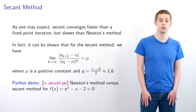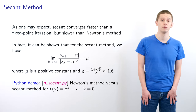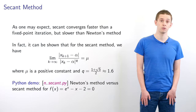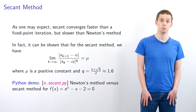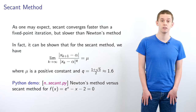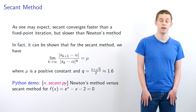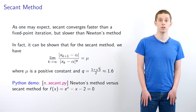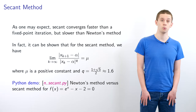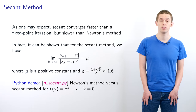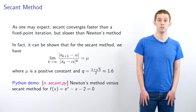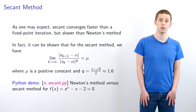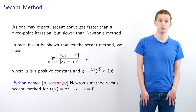As one might expect, the secant method converges faster than fixed point iteration but slower than Newton's method. It can be shown that the limit as k goes to infinity of |x_{k+1} - alpha| / |x_k - alpha|^q equals mu, where mu is a positive constant and q is equal to the golden ratio, approximately 1.618.